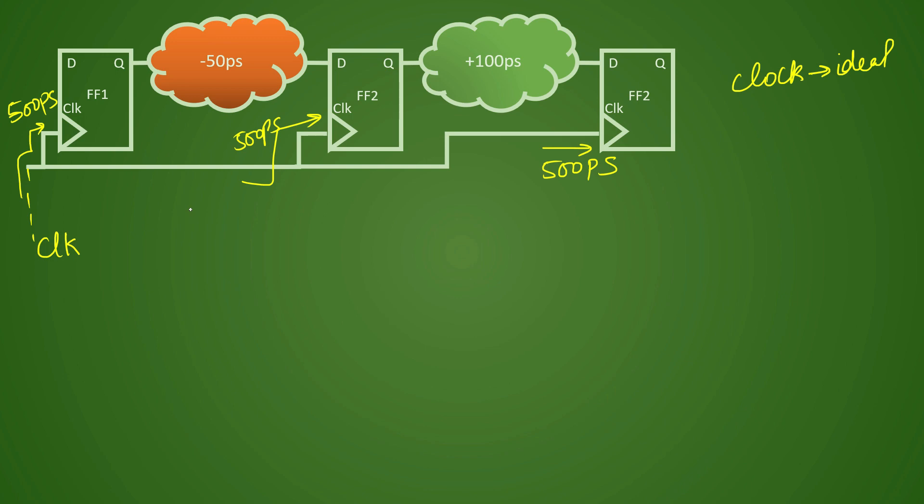Currently if you see clock latencies are same everywhere, and if you try to calculate skew for any particular timing path, let's say you want to calculate time skew for this particular path, it will be 0 picoseconds. Even if you try to calculate skew for this particular path since latencies are same it will again come to 0 picoseconds. But let's say if you want to make use of this particular zero skew which is ideal because clock is ideal.